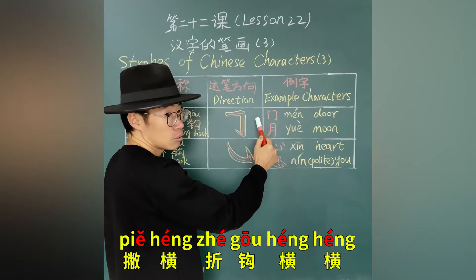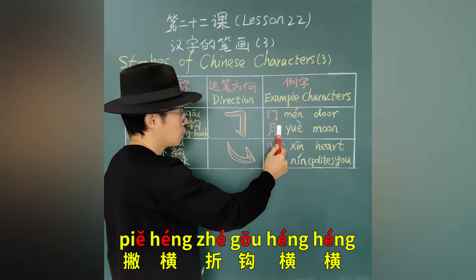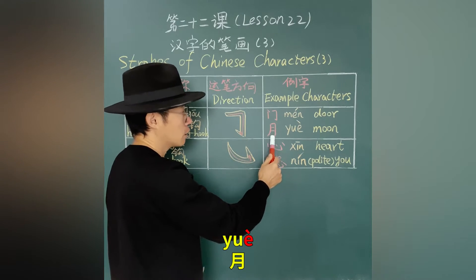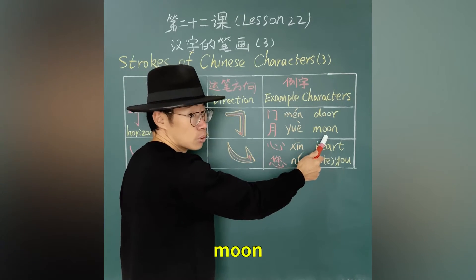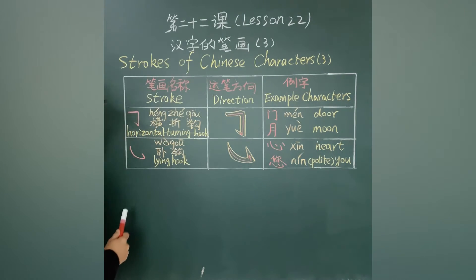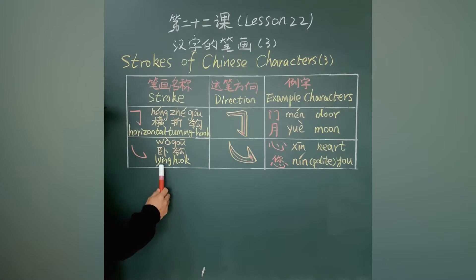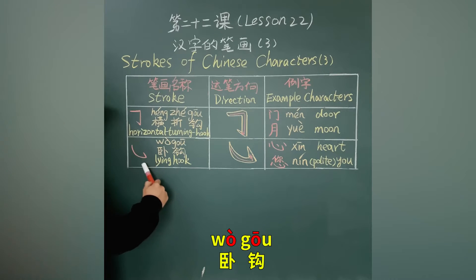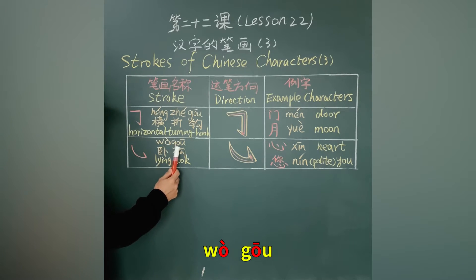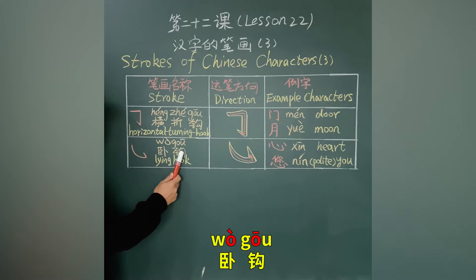横折沟 — demonstrating the stroke and its variations 横折沟, 顔, 握, 沟, 落沟.